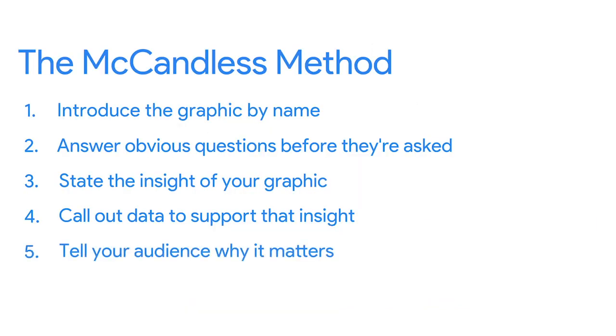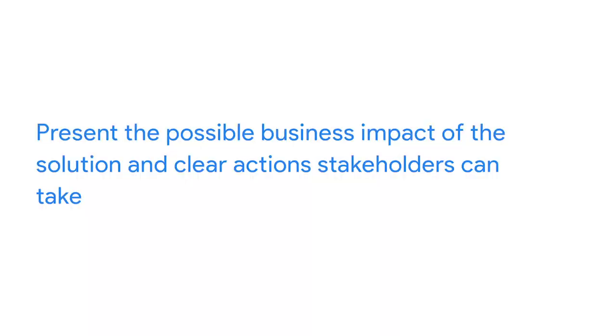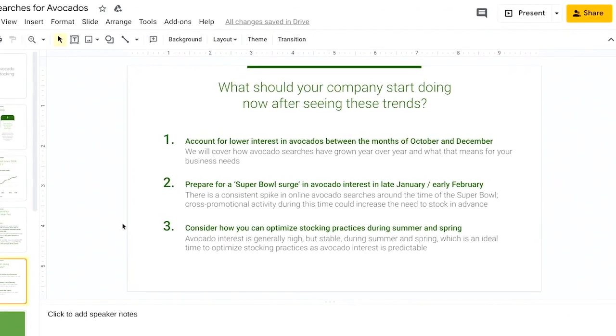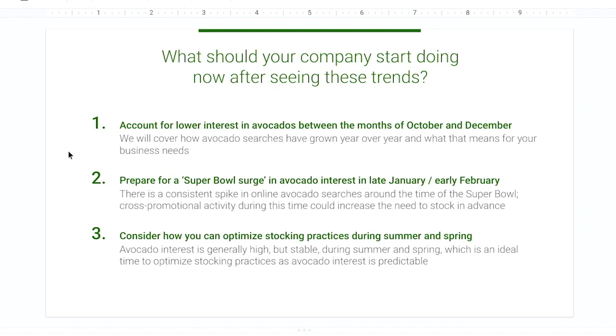Finally, it's time to tell your audience why it matters — this is the 'so what' moment. Why is this insight interesting or important to them? This is a good time to present the possible business impact as a solution and clear action stakeholders can take. So let's explain what this data helps our grocery store stakeholder do: they can account for lower interest in avocados between October and December; they can also prepare for the Super Bowl surge in avocado interest in late January and early February; and they'll be able to consider how to optimize stocking practices during summer and spring. And that's how we use the McCandless method to introduce data visualizations during our presentations.